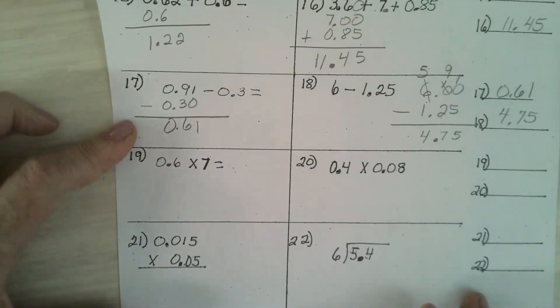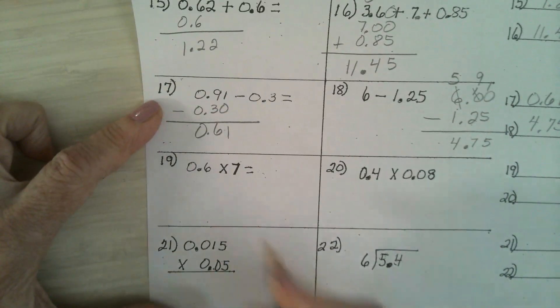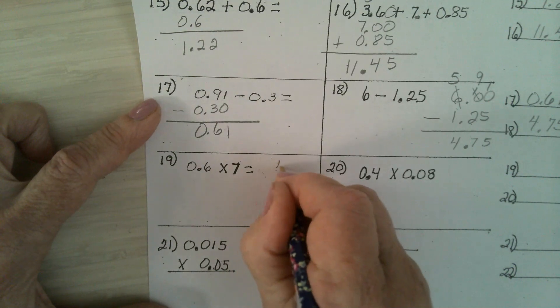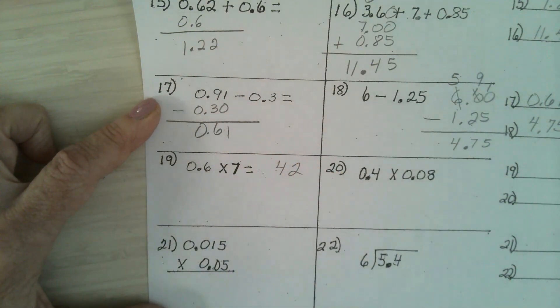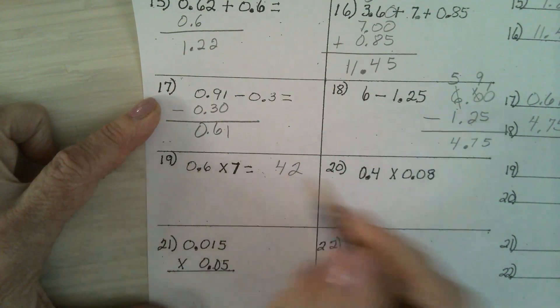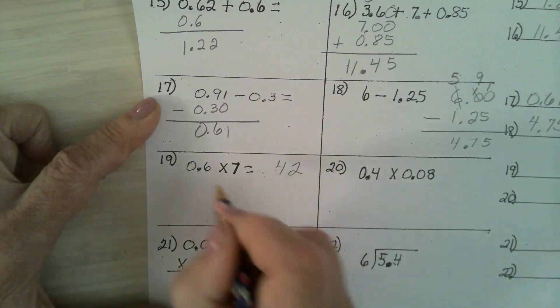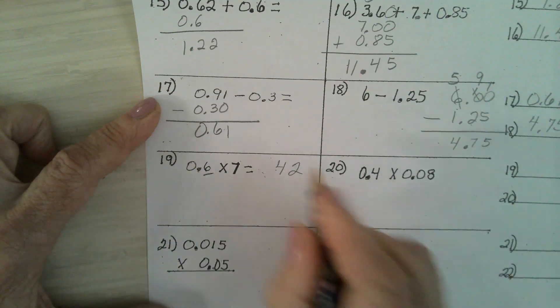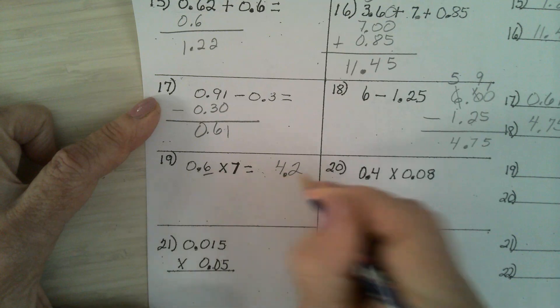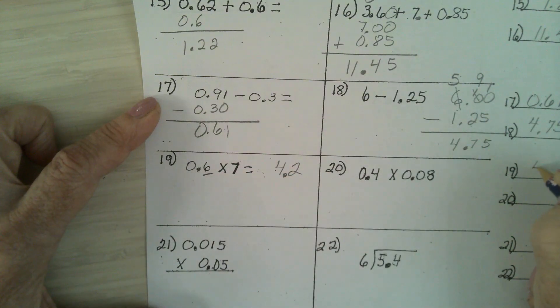Number 19. 0.6 times 7 is 42. We are multiplying. But there's a decimal point. How many numbers are behind the decimal point in the problem? 1. You can't put 42. It's 4.2.